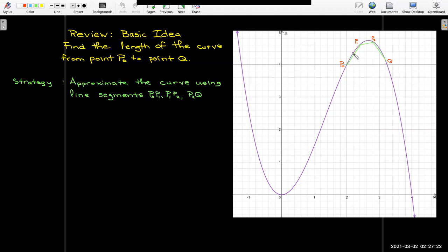We're going to break up the curve, put some points on the curve, and draw some line segments, and then calculate the length of those line segments using the distance function, and then add up the lengths as an approximation.